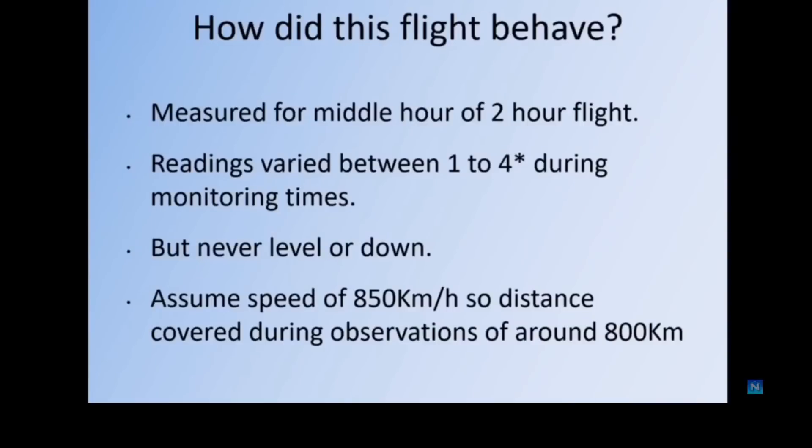Adam. Now, all of the readings vary between one and four degrees upward incline during the flight. They were never level, never got to even level flight, and it certainly never got anywhere near nosing down. Now on the flight, the assumed speed was about 850 kilometers. So we'll say a distance roughly of about 800 kilometers was covered during this hour's analysis.